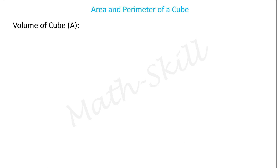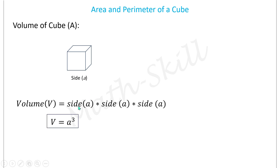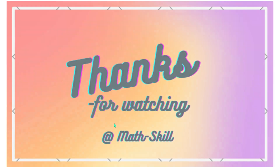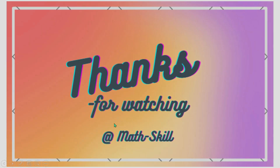Now let us see how to find the volume of a cube. Volume of a cube is the total quantity that can be held in the shape with side a. Therefore, volume of a cube is equal to a multiplied by a multiplied by a, that is, volume = a³. Volume is expressed in cubic units. This completes the session — thanks for watching.